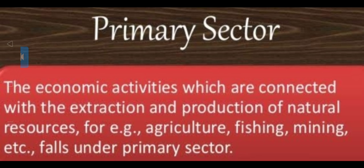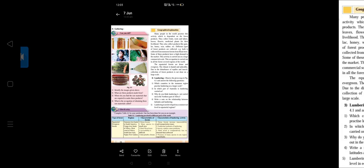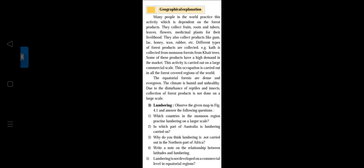The first primary sector activity we spoke about was hunting. Many people in the world practice activities dependent on forest products. They collect fruits, roots and tubers, leaves, flowers, medicines, and plants for their livelihood. They also collect products like gum, lac, honey, wax, and rubber.